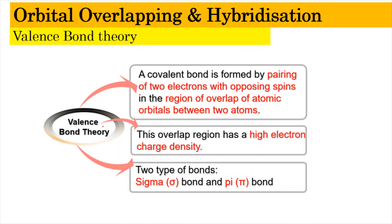So, valence bond theory. Valence bond theory states that a covalent bond is formed when two electrons with opposite spin exist in the regions of overlap of atomic orbitals between two atoms. For example, in the hydrogen molecule, the 1s orbital of one hydrogen atom overlaps with the 1s orbital of another hydrogen atom. The region of overlapping involves electrons of opposite spin, and what they form is the sigma bond, represented as a single bond.